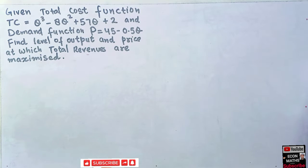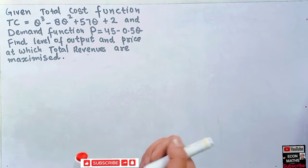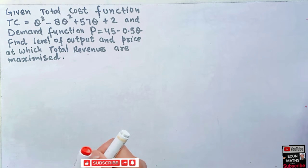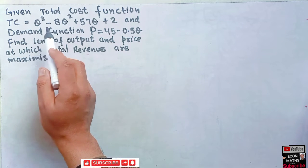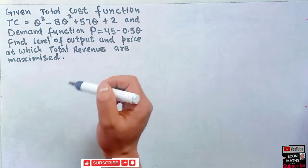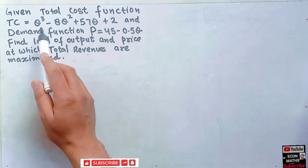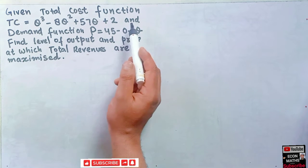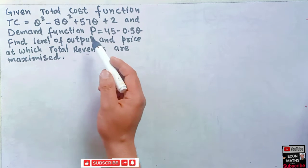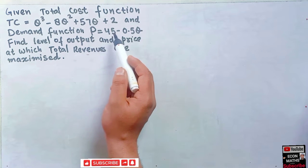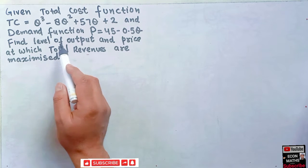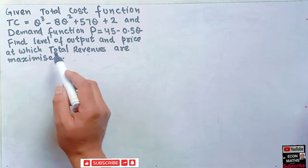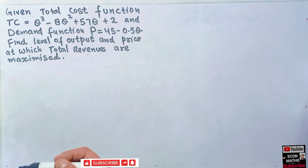Hi, this is Halal. In this video I will try to solve a question asked in the comment section. The question is: given total cost function TC = Q³ - 8Q² + 57Q + 2, where TC is total cost and Q is quantity, and demand function P = 45 - 0.5Q, where P is price and Q is quantity — find the level of output and price at which total revenues are maximized.